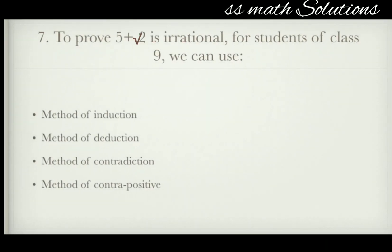To prove that 5 plus root 2 is irrational for students of class 9, which method can we use? Options: method of induction, method of reduction, method of contradiction, method of contrapositive. The answer is the method of contradiction.